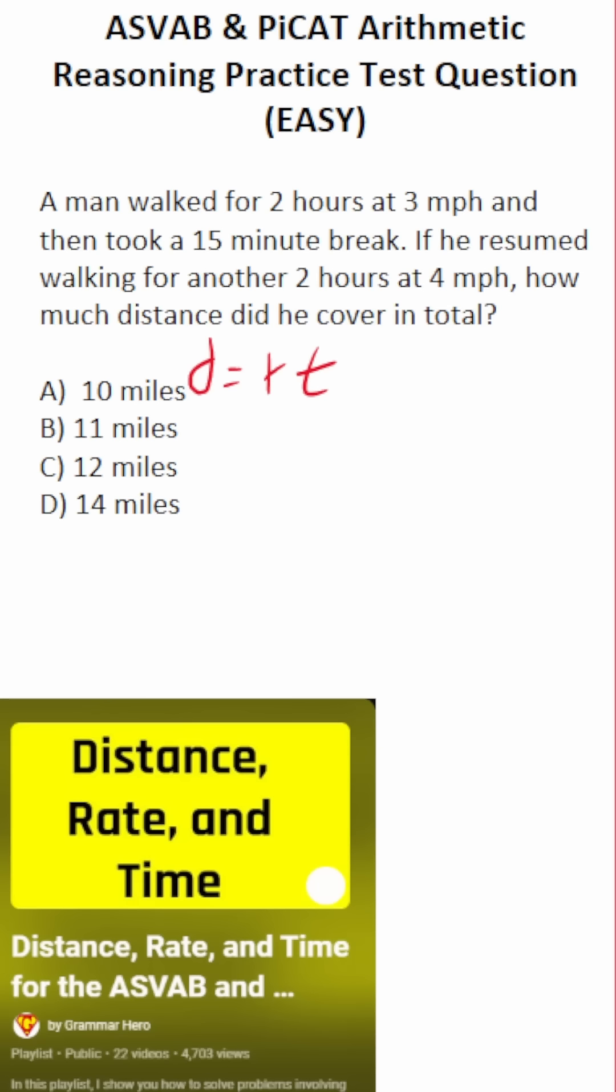So what we're going to do in this case is we're going to use two iterations of the distance formula to calculate how far he walked in total. I'm going to call the distance he walked before his break D1 and the distance he walked after his break D2. And of course, that is equal to rate times time.